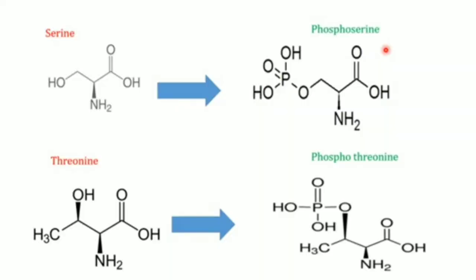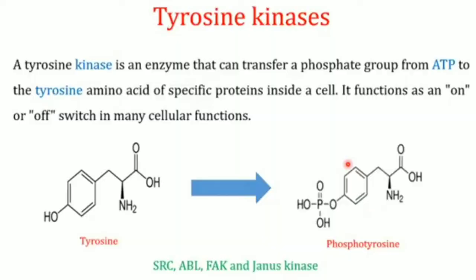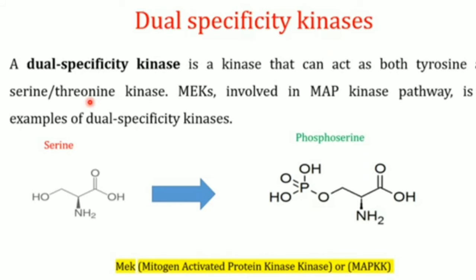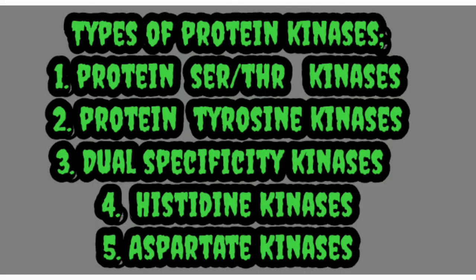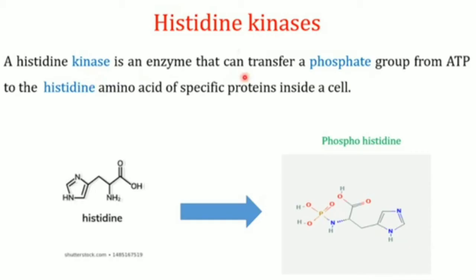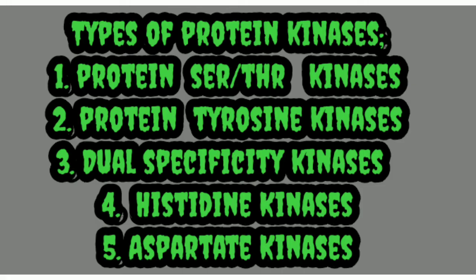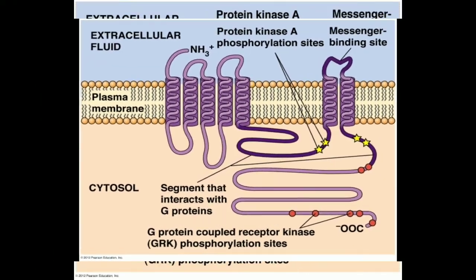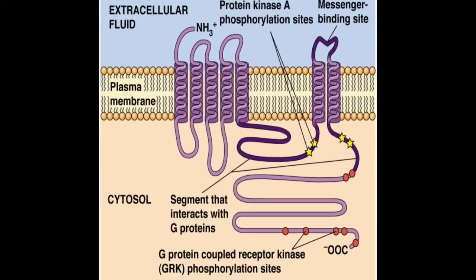The first is protein serine-threonine kinase, which phosphorylates either serine or threonine in the target protein. The second is protein tyrosine kinase, which phosphorylates tyrosine in the target protein. The third is dual specificity kinases, which phosphorylate target proteins on either tyrosine or serine-threonine. Fourth are histidine kinases, which phosphorylate target proteins on histidine. The fifth is aspartate kinase, which phosphorylates target proteins on aspartate amino acid residues.